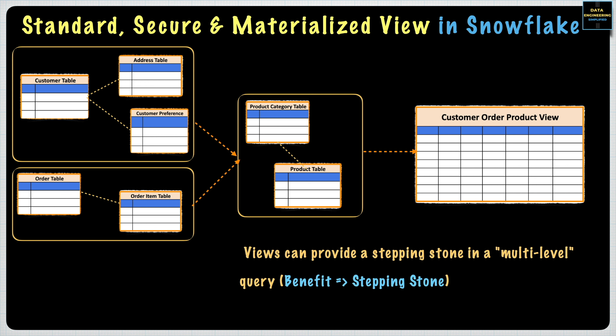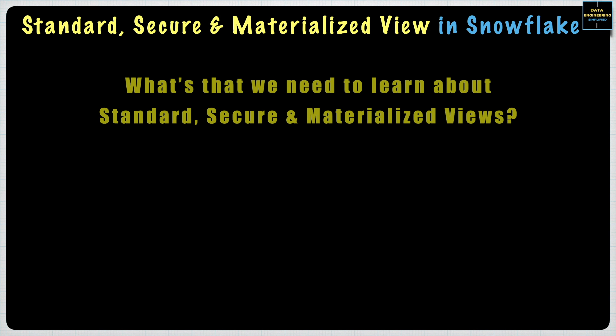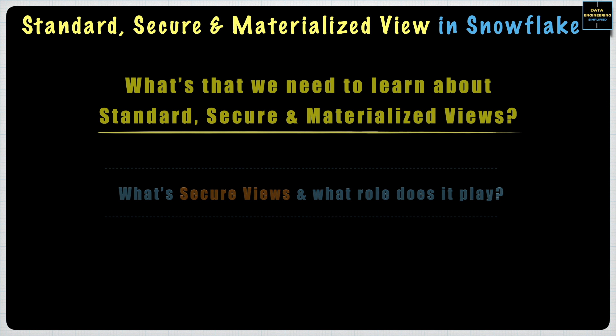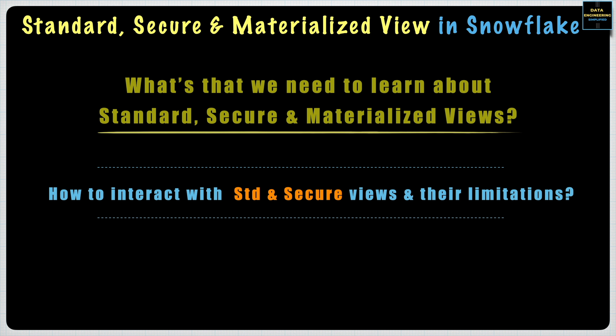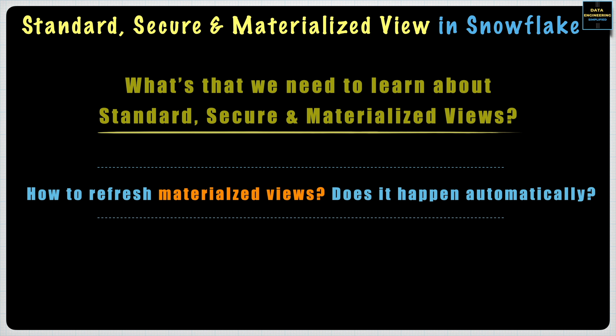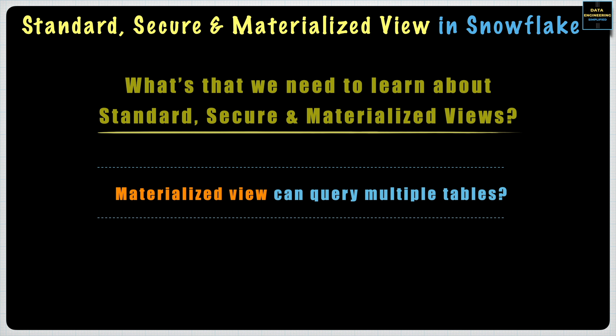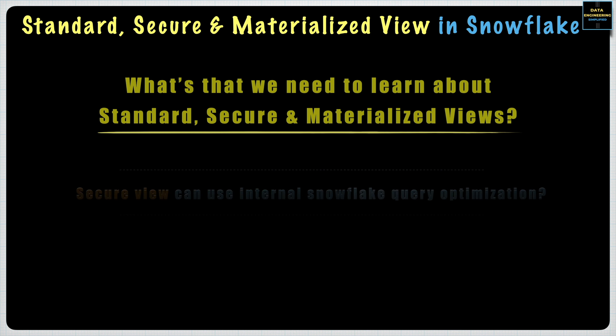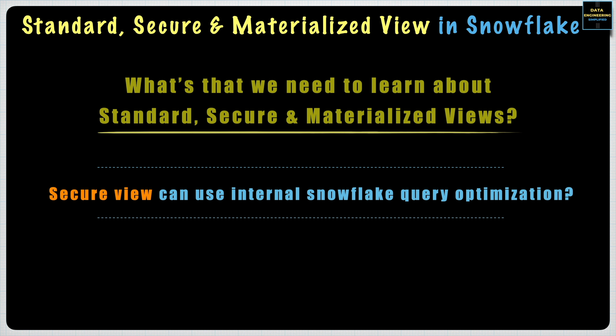Snowflake has built many features around views and it is important for a Snowflake data developer to know about them. This chapter is dedicated to answering the following questions: What are secure views and what role do they play? How to interact with standard and secure views and their limitations? How to understand whether it is a secure view, standard view, or materialized view. How to define and work with recursive views. Does a view work with stream objects? How to refresh a materialized view, or does it happen automatically? Can a materialized view query multiple tables, or does it have certain limitations? Can a secure view use internal Snowflake query optimization, or are there limitations?